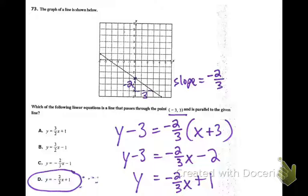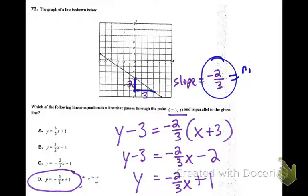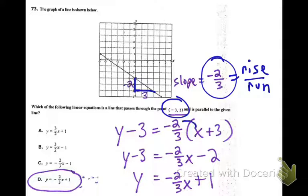For a line parallel to the given line: figure out the slope from the graph — you can go down 2 and over 3, so the slope is negative 2/3 (rise over run). Use that slope and the given point in point-slope form, then distribute and add the 3 over.